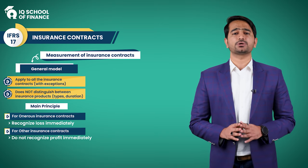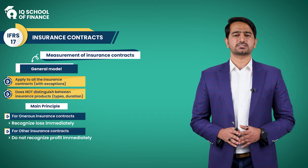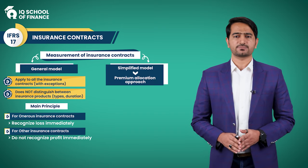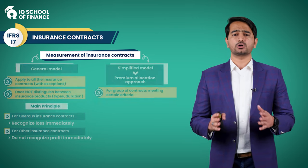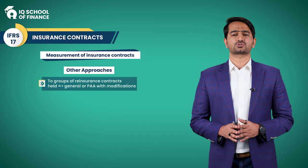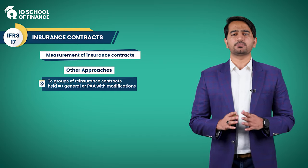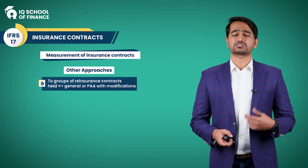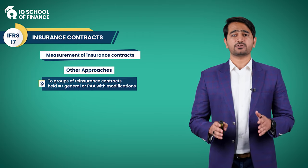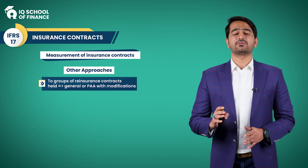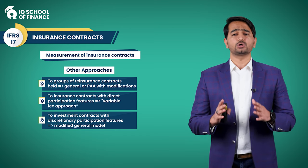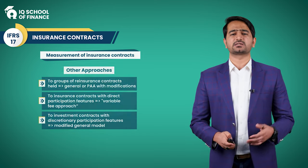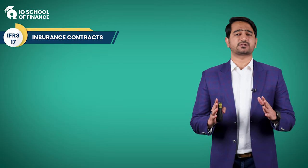IFRS 17 also introduces modifications to the general model. First, there is a simplified model known as the premium allocation approach, which can be used for insurance contracts meeting certain criteria. For groups of reinsurance contracts held, the general model may be used with some modification, or the premium allocation approach can be adapted. For insurance contracts with direct participation features, the variable fee approach is recommended. Investment contracts with discretionary participation features should also follow the general model with certain modifications.